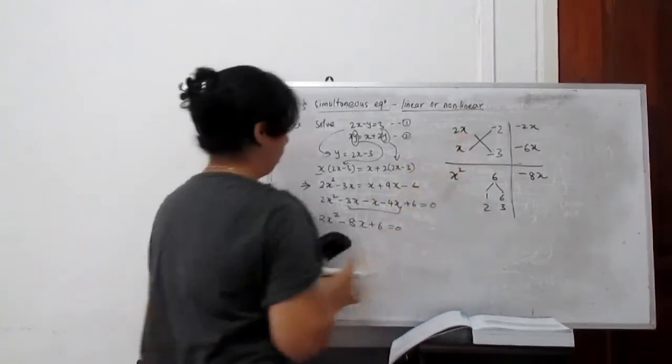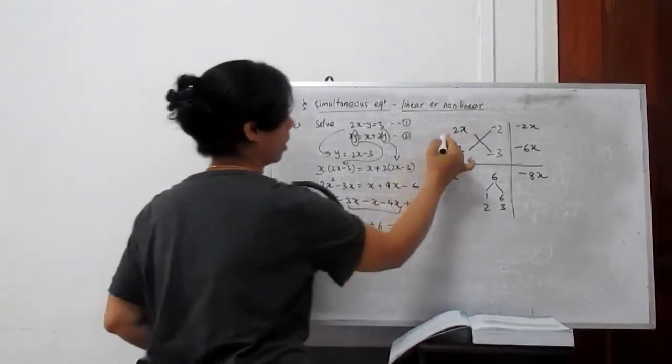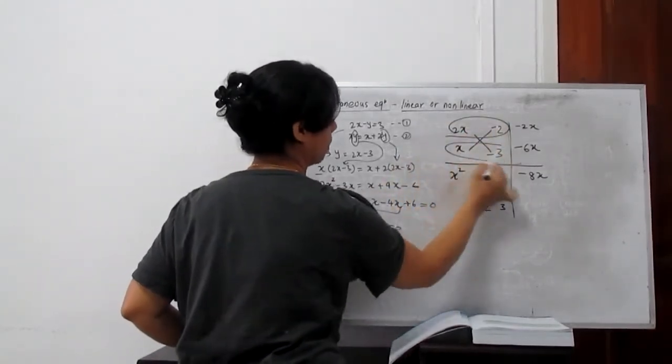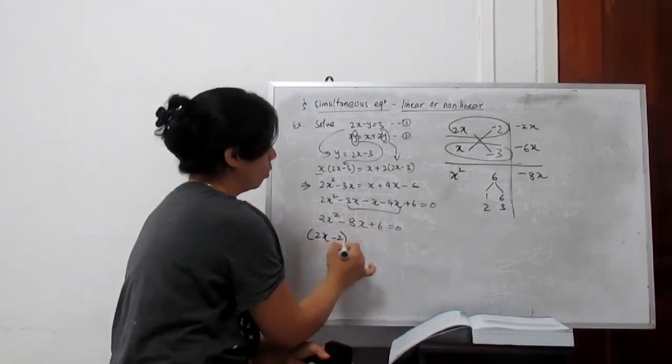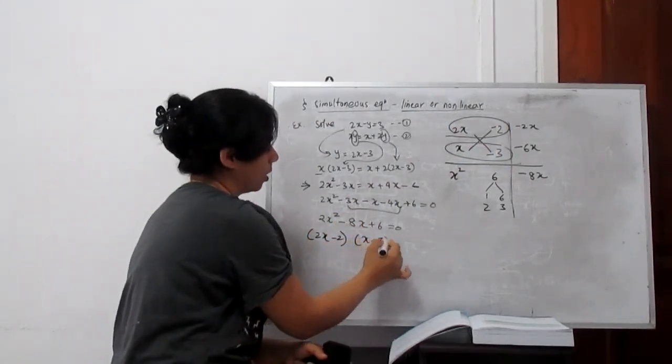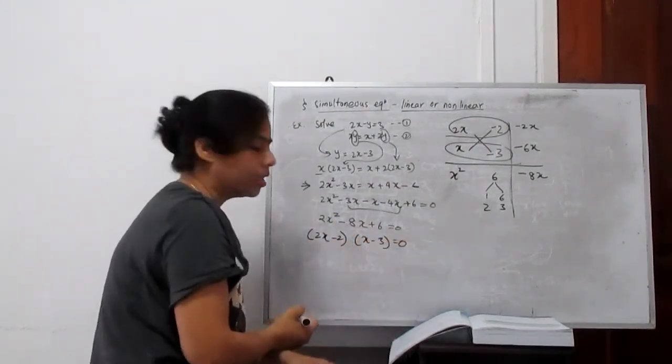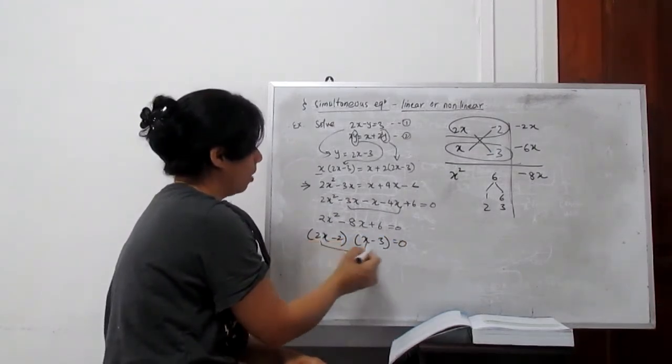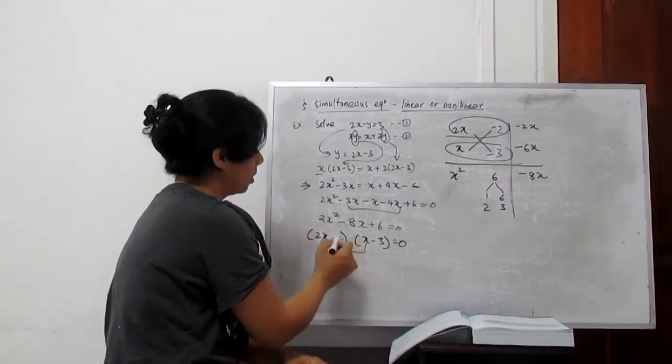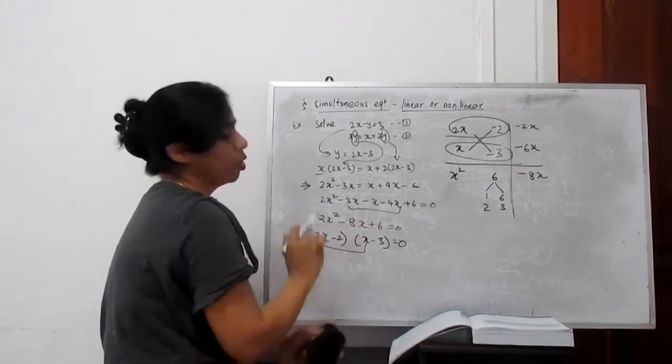So our factors of this equation become, we have to pair in this way, not in the cross way. So it's 2x minus 2 and x minus 3 equals 0. So you can recheck also. See, 2 times x is 2x squared minus 6x minus 2x is 8x and minus times minus is 6. So it's clear.